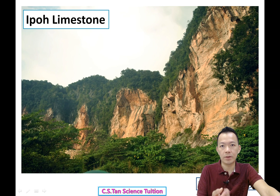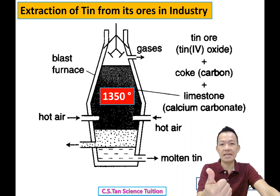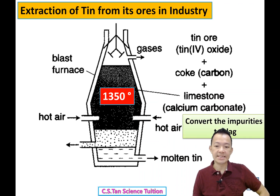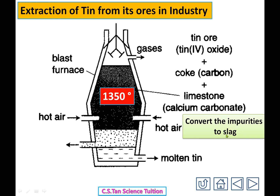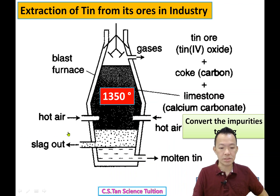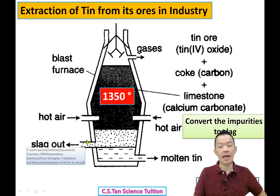What is the function of the limestone? Limestone reacts together with the impurities in the tin ore — like sand, soil, and other things — and finally becomes slag. So limestone converts the impurities into slag. Slag will float above the molten tin, and then we separate them.